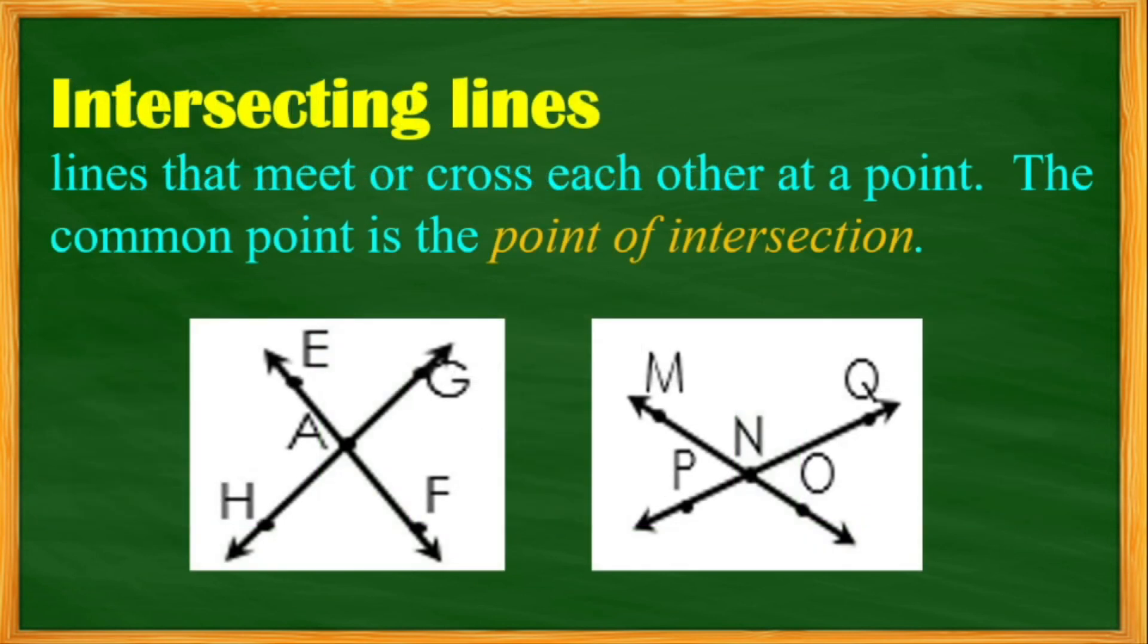Next, intersecting lines. When we say an intersecting line, the lines that meet or cross each other at a point, the point of intersection is letter A.